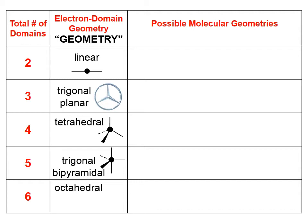If there are six total domains, you have an octahedral electron domain geometry. The stick figure shows a domain to the left, to the right, above, below, towards us, and away from us.